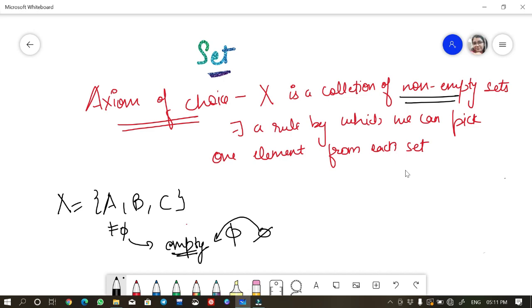So I have considered this A, B, C are non-empty and this rule is saying that whenever X is a set of non-empty sets there is a rule by which we can pick one element from each of the sets. That we can choose A from capital A, B from capital B and C from capital C. So this is the axiom of choice.